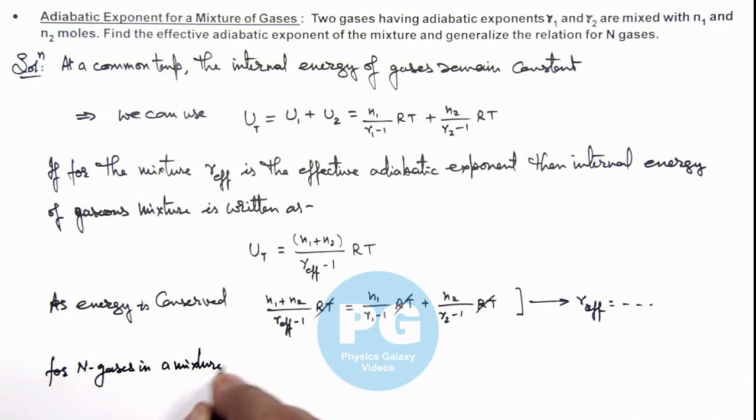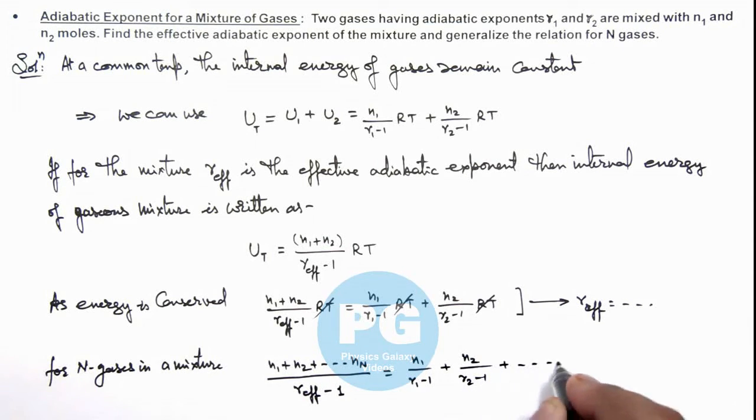(n1 plus n2 plus and so on up to n_n) divided by (gamma effective minus 1) should equal n1 by (gamma 1 minus 1) plus n2 by (gamma 2 minus 1) plus and so on up to n_n by (gamma_n minus 1). So this is the relation using which we can calculate directly the effective adiabatic exponent for a mixture of gases. That's the result of this problem.